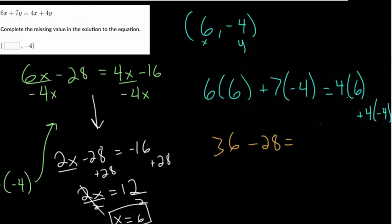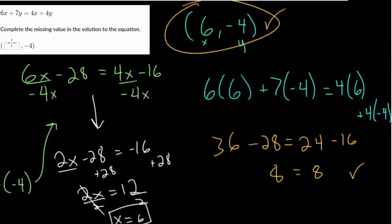So we have 36. This is minus 28. This is 24. And this is minus 16. This is 8. And this is 8. So since we reduced it to something that's always true, we can feel confident that this is the correct answer. And so 6 would go in our box here.